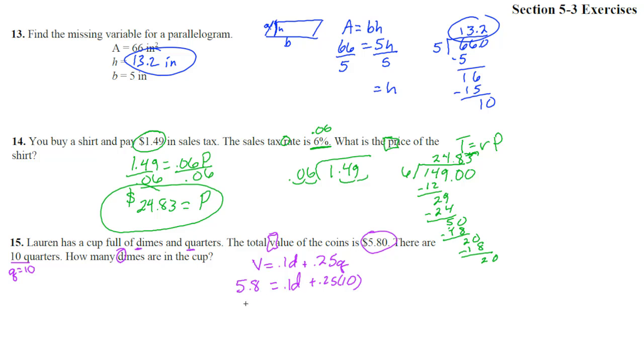All right. Simplify it. 0.1D plus 2.5. And yeah, hey, look, it's simplified. Smiley face here, because now we're going to subtract the 2.5, and then divide by 0.1. So subtract 2.5, subtract 2.5. We get 3.3 equals 0.1D.